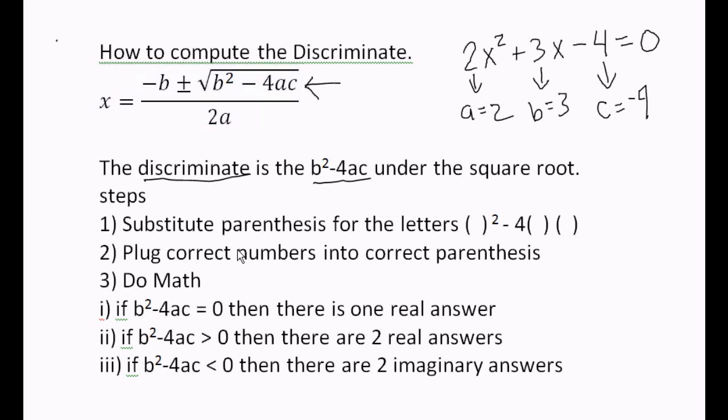Once you plug your numbers into the discriminant, the steps here, step 1, substitute the parentheses for the letters. In other words, you're going to put parentheses in the b squared minus 4ac.